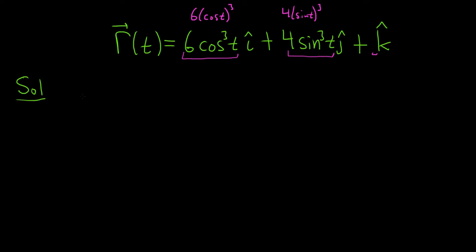we will use the chain rule. So r prime of t is equal to, we'll bring the 3 down. So 3 times 6 is going to give us 18. We leave the inside untouched, so we have cosine of t squared times the derivative of the inside function, which is our cosine. That's going to give us negative sine t. And we still have the i hat.